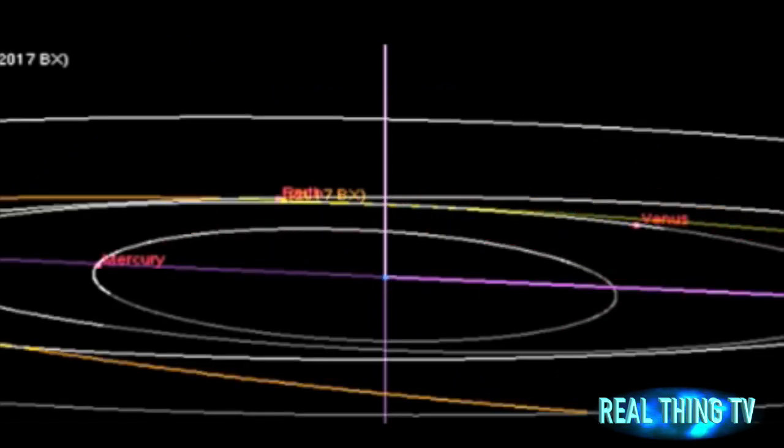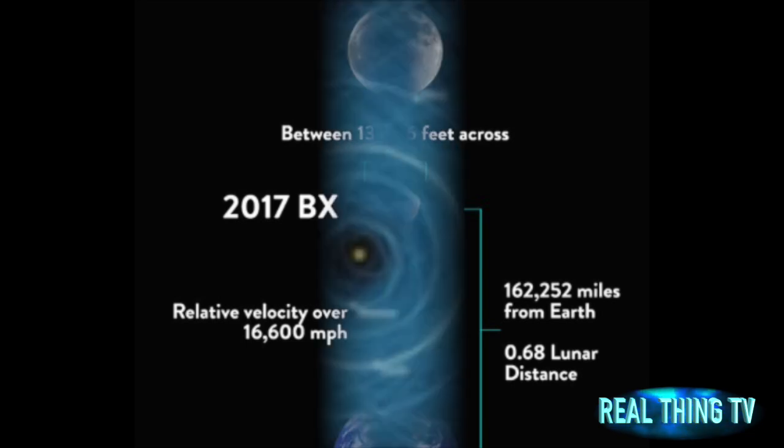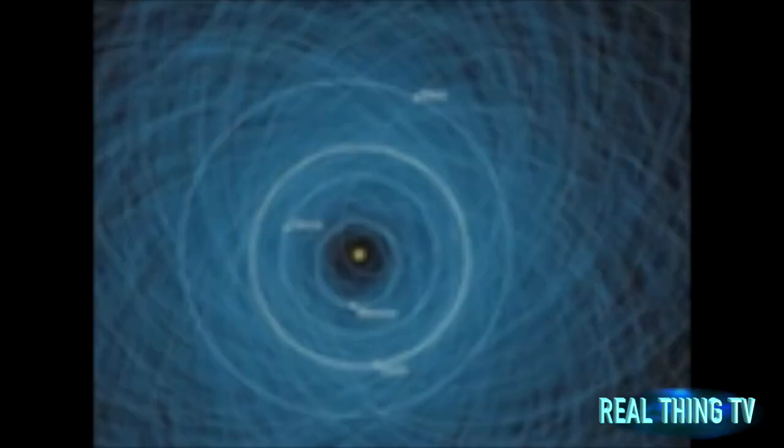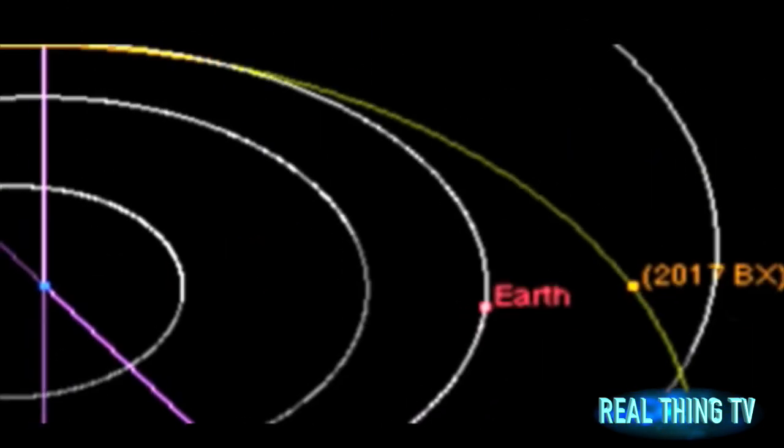The near-Earth object 2017 BX was first discovered on January 20 and will make its closest approach to the Earth at 4:54 UTC on January 25, 11:54 EST January 24.